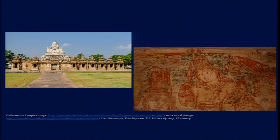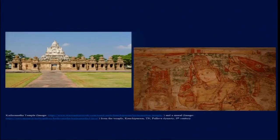We study this particular temple because it was almost left intact by the people who came to rule these places later — the Cholas, the Vijayanagara dynasty, the Nayakas — and that is why we still have some remnants of 8th-century pigments. We will focus not on the architectural structure but on how images, architecture, painting, and sculpture were all closely related.